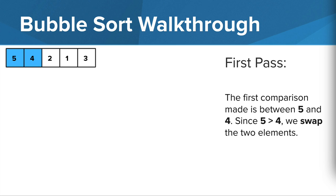Let's look at an example walkthrough of this algorithm in action. So here we have an array 5, 4, 2, 1, 3. And we're going to apply the bubble sort algorithm to sort it from least to greatest. It's important to note that with the bubble sort algorithm, you may need to pass over the array multiple times until it is fully sorted. So let's get started. In the first pass, the first comparison made is between 5 and 4. And since 5 is greater than 4, we swap those two elements.